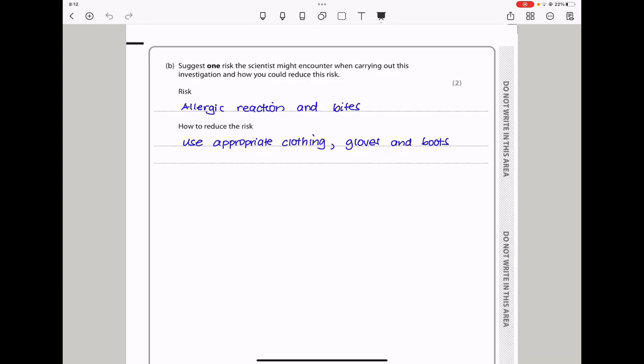In part B, suggest one risk that the scientists might encounter when carrying out this investigation and how you would reduce the risk. Because we're working with plants, there could be allergic reactions as well as insect bites. They have to use appropriate clothing, gloves, and boots to prevent all that.